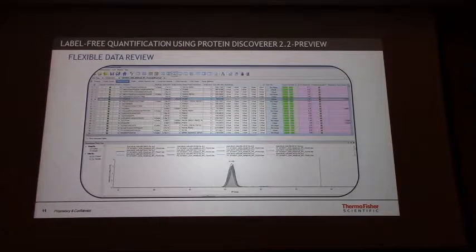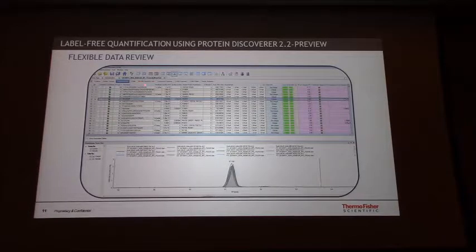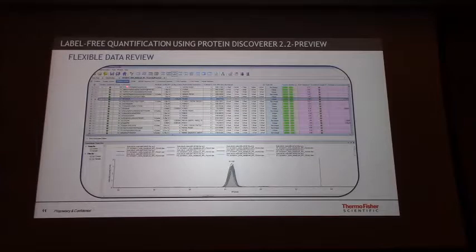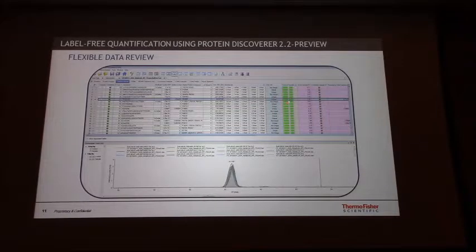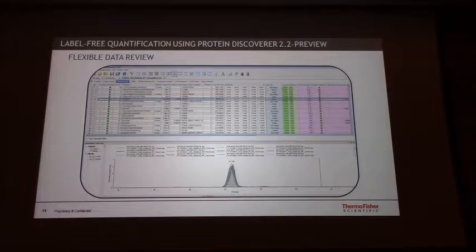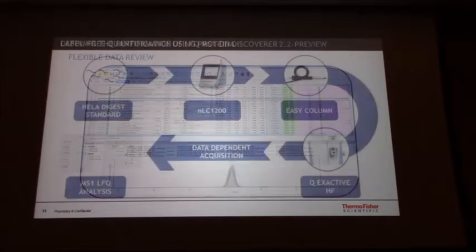Here is a screenshot of the software. You can see that you get different tabs — for example, in the peptide groups tab you get all the peptide IDs with the different parameters, and we have examples showing where each feature has been detected and identified. If you click on a peptide, you can see how well the alignment has been done.